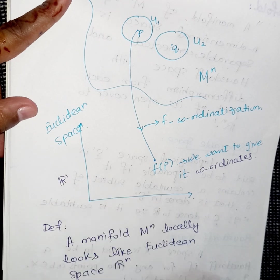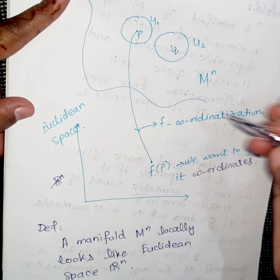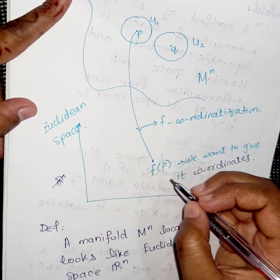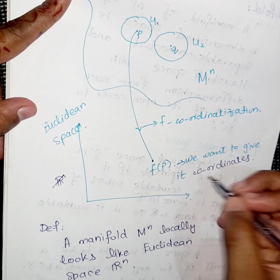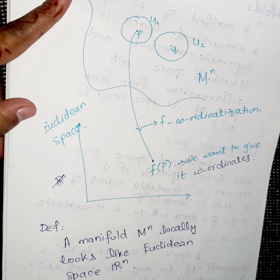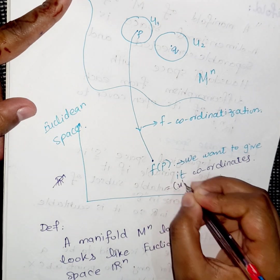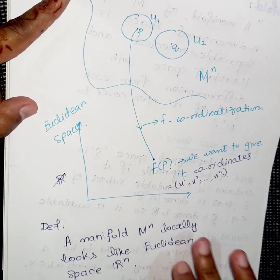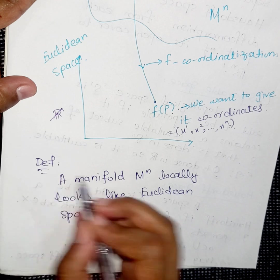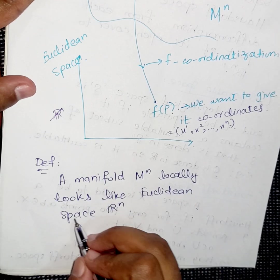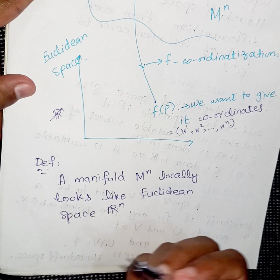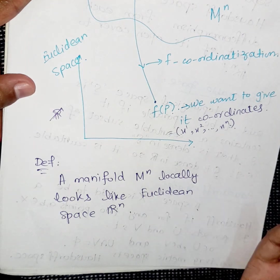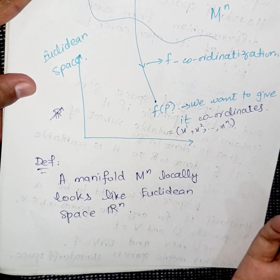We define a mapping f called coordinatization. The mapping f of p gives coordinates x₁, x₂, up to xₙ. A manifold Mⁿ locally looks like a Euclidean space Rⁿ — we are actually giving it coordinates and saying that it resembles the Euclidean space Rⁿ.